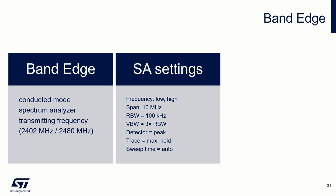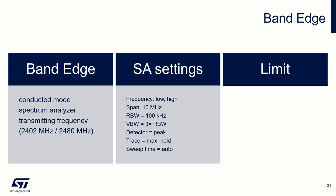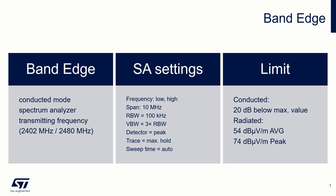In the case of the conducted method, the measurement can be performed as follows. Select the start and stop frequencies according to the used channel. In the case of the 2402 MHz frequency, the span is from 2395 MHz to 2405 MHz. In the case of the 2480 MHz channel, the span is from 2478.5 MHz to 2488.5 MHz. The display bandwidth is therefore always 10 MHz. After stabilizing the signal, we set the marker to the maximum value of the signal envelope in the band up to 2400 MHz, respectively in the band above 2483.5 MHz. We always compare this value with a minimum distance of 20 dB from the maximum in the authorized band.